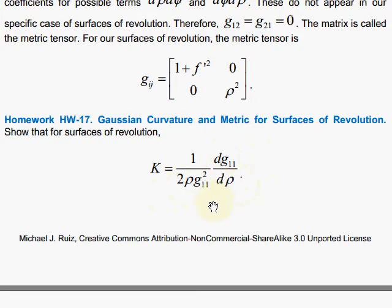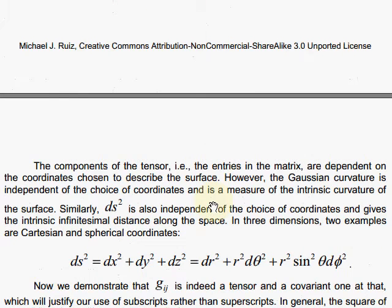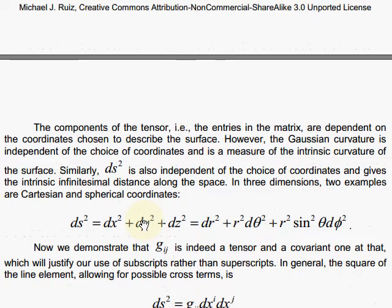Later, we'll look at a more general formula. So the components of the tensor, the entries in the matrix, are dependent on the coordinates that we pick, whether it's Cartesian coordinates or cylindrical coordinates, any kind of coordinates that you imagine. But the neat thing about the Gaussian curvature is that that's independent of the choice. That is the curvature that gives us a measure of the intrinsic property of the surface itself.